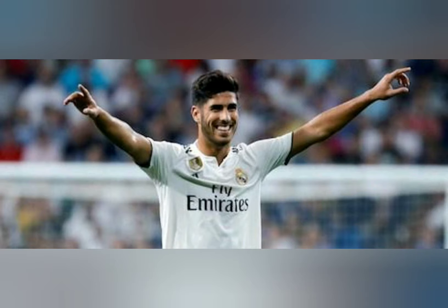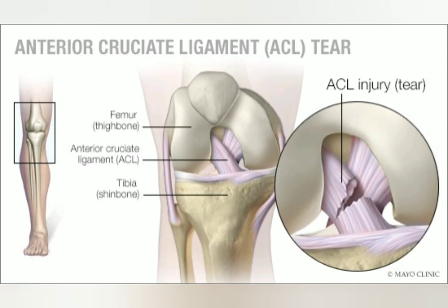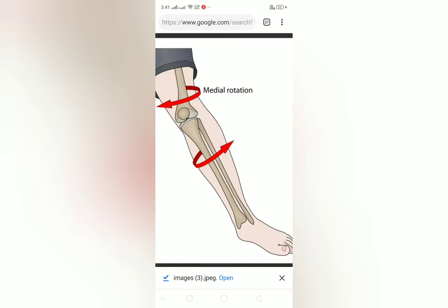ACL injuries can occur when contact is made with another player, such as a tackle from the side causing a valgus force to the knee, or knock knee. Similarly, non-contact soccer injuries to the ACL are commonly caused by the repetitive and quick movements mentioned above, or landing awkwardly.